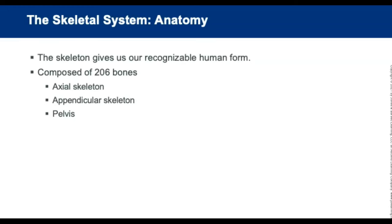Now we're going to talk about all those body systems, starting with the skeletal system. The skeletal system gives us our recognizable human form and protects vital internal organs. It's made up of 206 bones and has two major divisions: the axial skeleton, which covers the middle area of the body, and the appendicular skeleton, which comprises all the extremities.